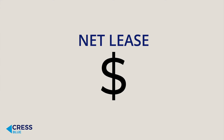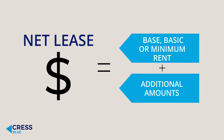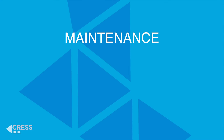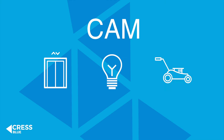So, what are these additional amounts? Depending on the terms of each lease, tenants pay for actual usage or a share of expenses. Generally, these expenses include tax, maintenance, and insurance charges, collectively called TMI. The maintenance portion may also be called common area maintenance, or CAM.